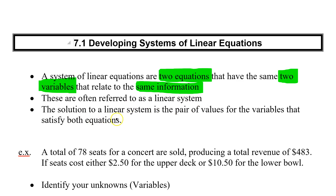The solution to a linear system is the pair of values — the x and the y value — that satisfies both equations. So you have two equations, and there's going to be one value for x and one value for y that are going to actually solve both equations. What is that value for x and what is that value for y? Let's look at an example.